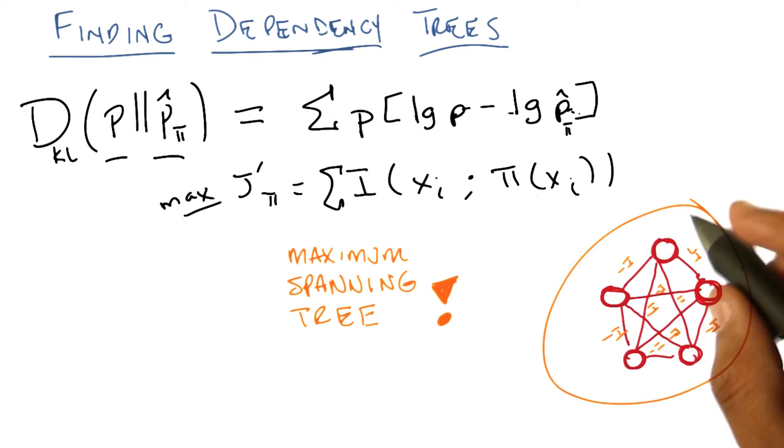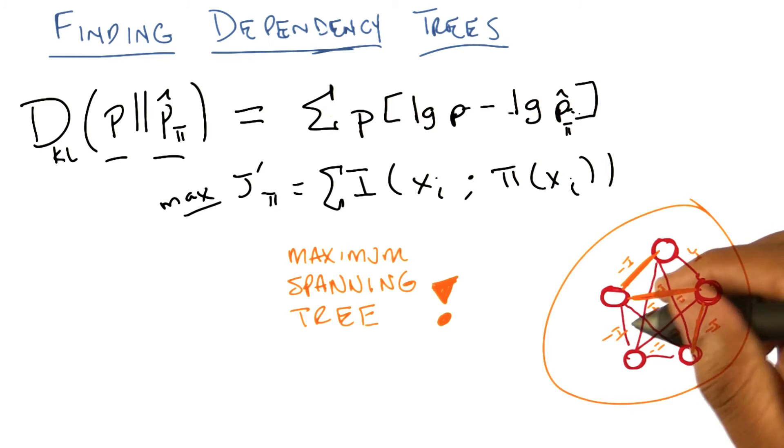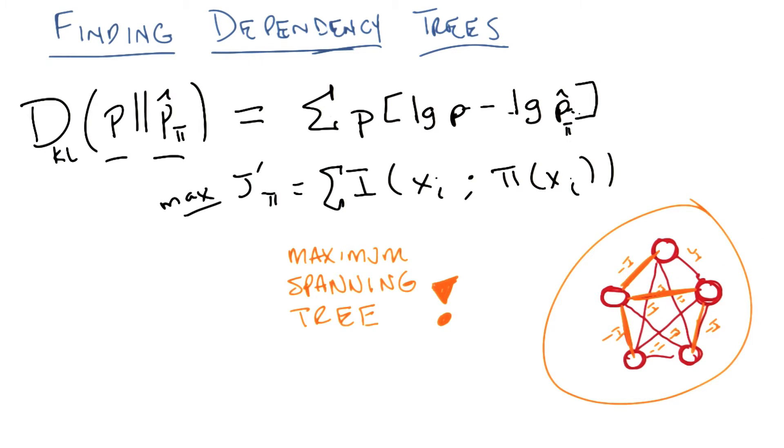When you find the maximum spanning tree, you'll end up with some tree and you're done. Well, now you need to tell me, because the structure was a directed structure. Can we pick any node and call it the root and then do a depth first traversal or something? Absolutely.